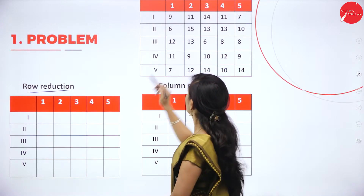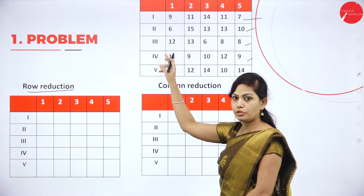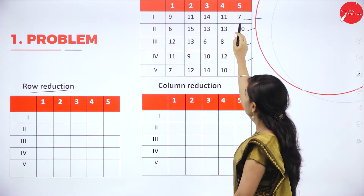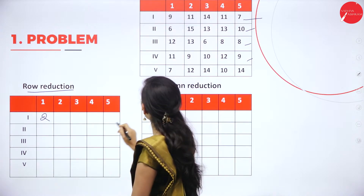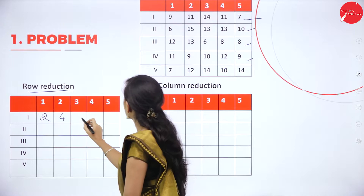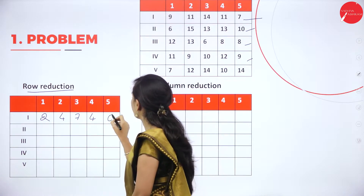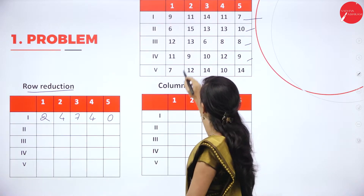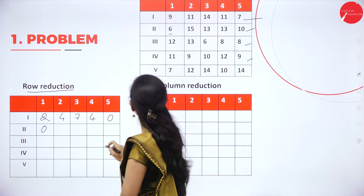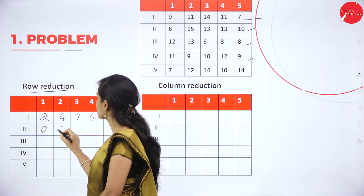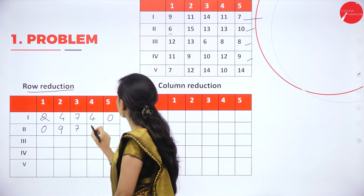To find the row reduction, in every row you have to find the least value and subtract that least value from the other values. In the first row the least value is 7. So 9 minus 7 is 2, 11 minus 7 is 4, 14 minus 7 is 7, 11 minus 7 is 4, and 7 minus 7 is 0. In the next row the least value is 6. So 6 minus 6 is 0, 15 minus 6 is 9, 13 minus 6 is 7, 13 minus 6 is 7.